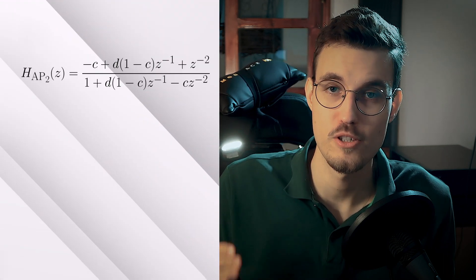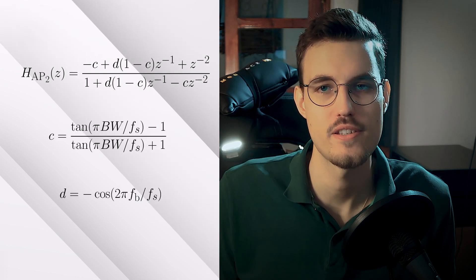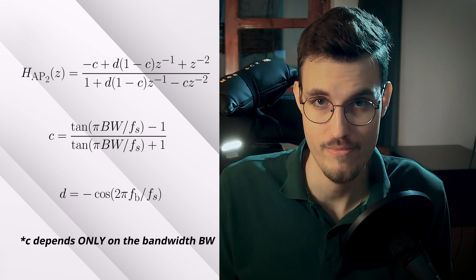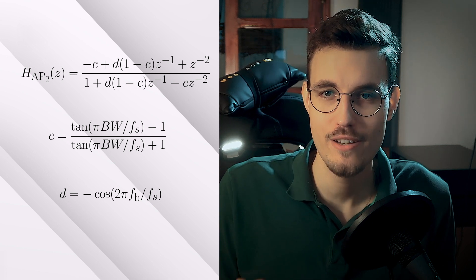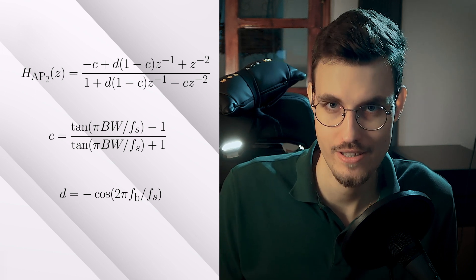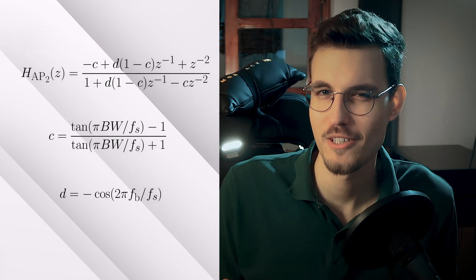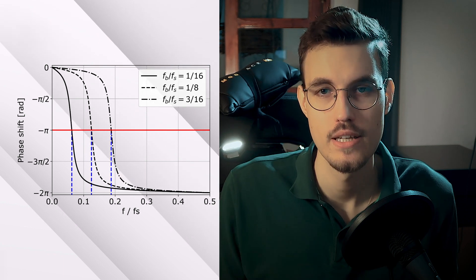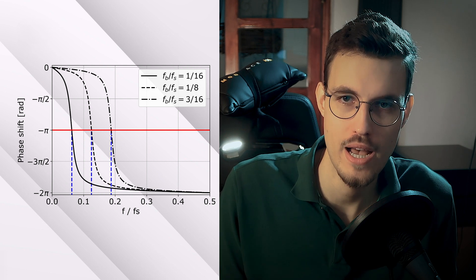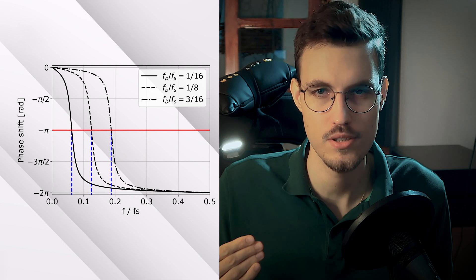An allpass filter is a filter that does not attenuate any frequencies, but it introduces a frequency-dependent phase shift. The transfer function of the second-order allpass filter is shown here, where C depends on the break frequency FB and on the bandwidth BW, and D depends just on the break frequency. The break frequency and the bandwidth are expressed in Hertz. FS denotes the sampling rate, also in Hertz. The break frequency specifies the frequency at which the phase shift is minus pi. The bandwidth specifies the width of the transition band in which the phase shift goes from 0 to minus 2 pi.